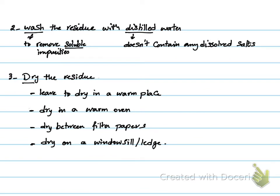If you see a filtration question with three marks, the steps will be: filter (one mark), wash (second mark), dry (third mark). The method of drying mentioned — for example, leave to dry in a warm place, dry in a warm oven, or dry between filter papers — any one of these methods counts. This is three marks.